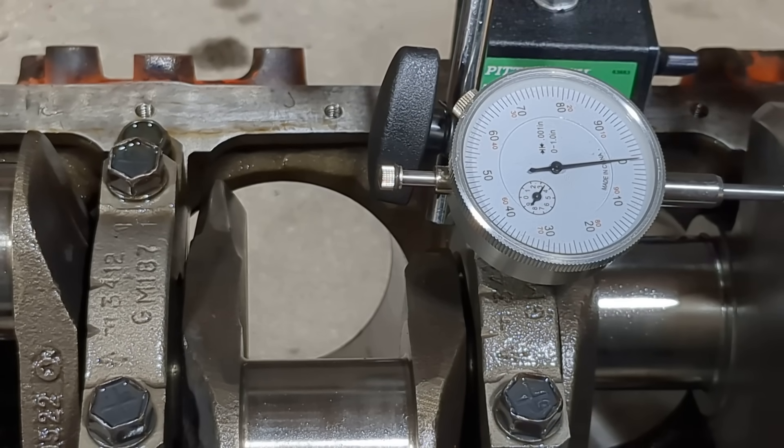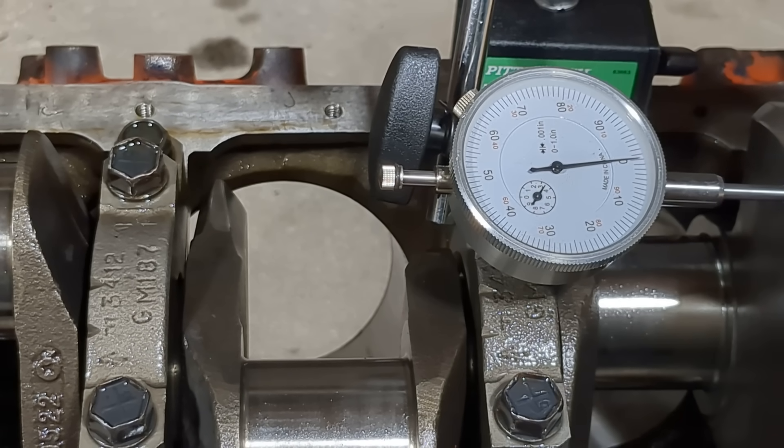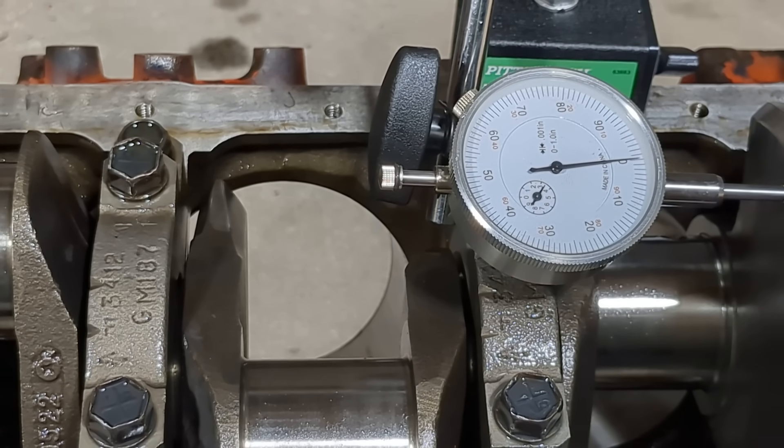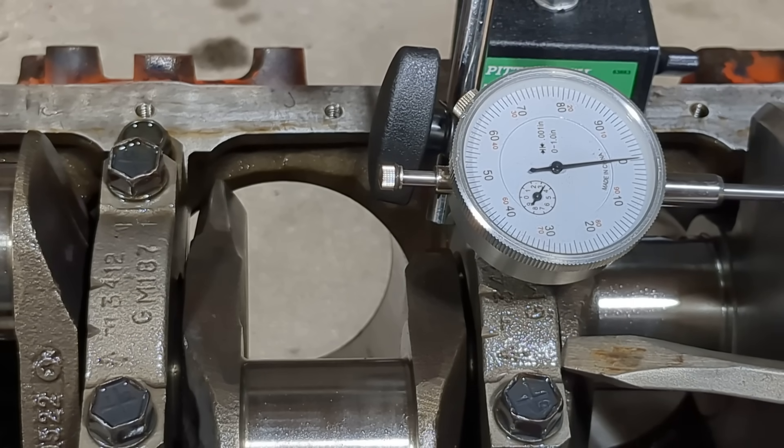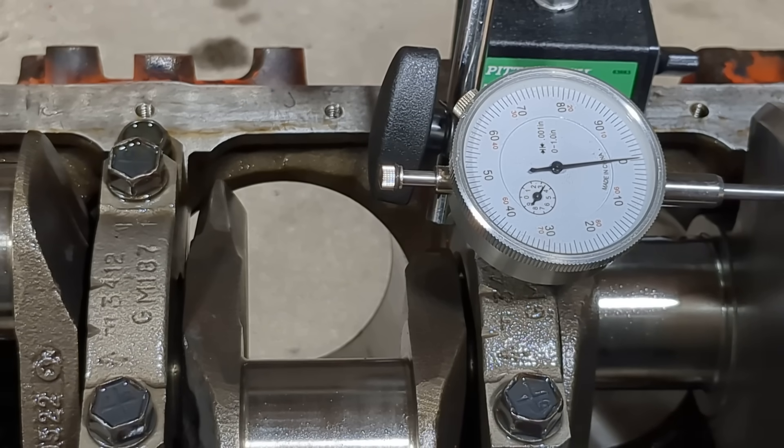Ten thousandths clearance, that is your thrust right there. Now I don't have the rear main cap on because I'm going to show you something, but normally in a Chevrolet and other engines as well, the thrust bearing is in the back of the block, the very last main cap. In a Ford the thrust bearing is usually around the center cap.